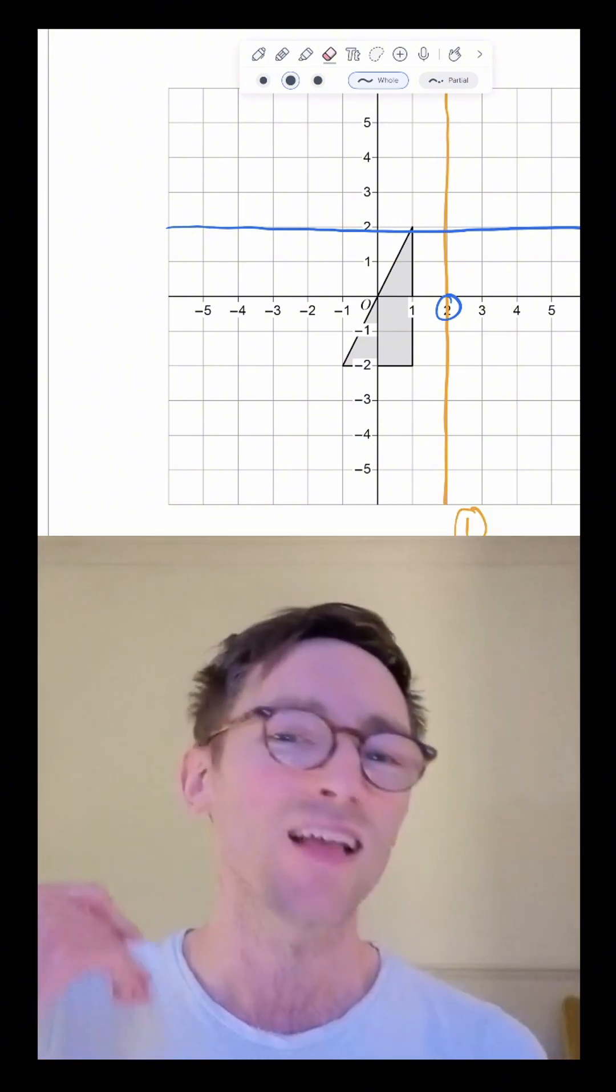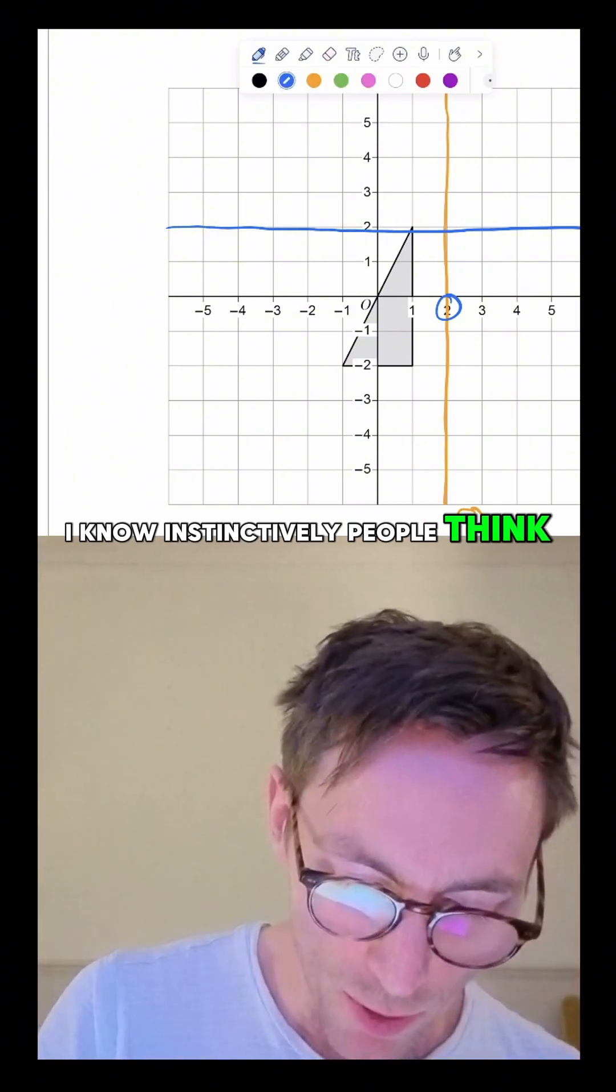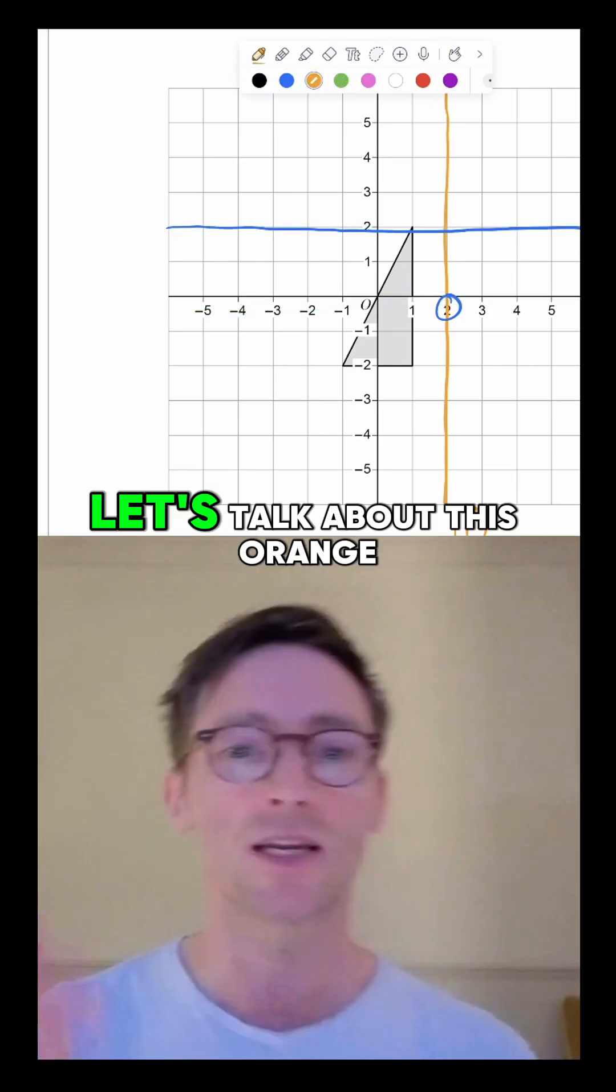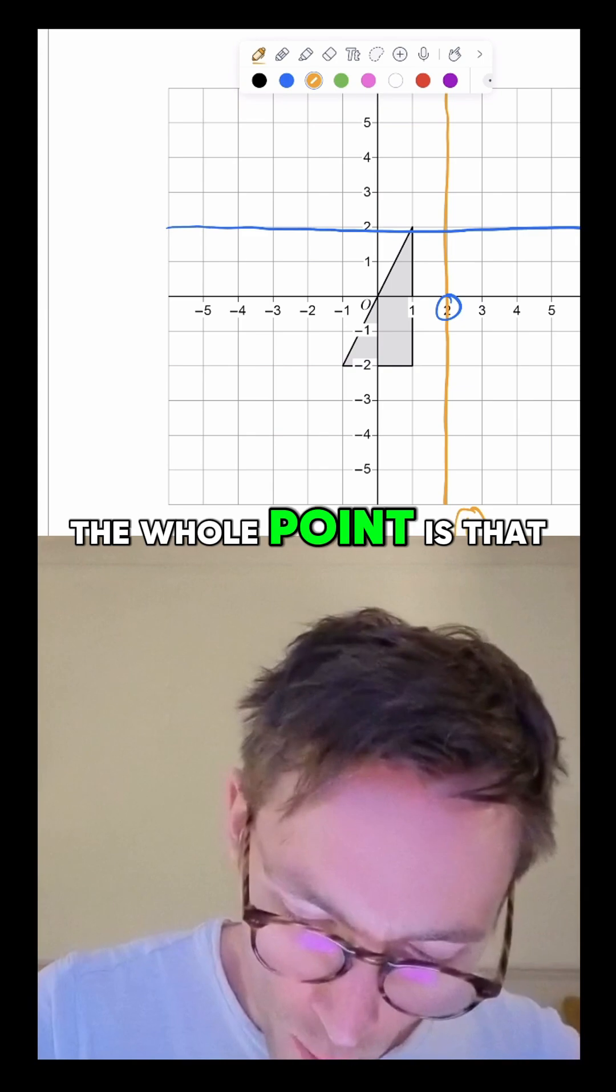Okay, I know instinctively people think, oh wait, x axis is this way, so x equals 2 has got to be like that way. No, let's talk about this orange line. The whole point is that on here the x value is 2.